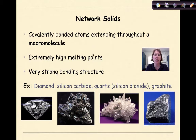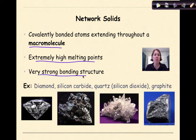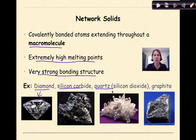Now let's talk about network solids. Network solids are a specific type of compound that has covalent bonds — a covalently bonded atom that extends throughout a macromolecule. They have extremely high melting points and a very strong bonding structure. Some classic examples of network solids are diamonds, silicon carbide, quartz — otherwise known as silicon dioxide (SiO2) — and graphite. So if you're writing with pencil, you're writing with graphite, and that is a type of network solid.